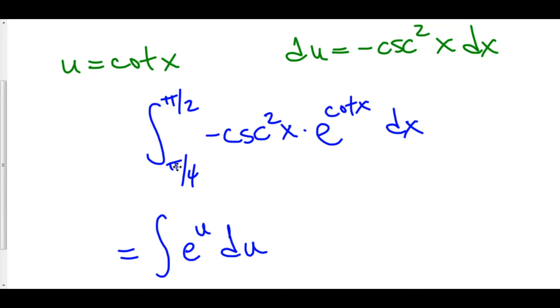So, for example, let's plug pi over 4 into cotangent. Cotangent of pi over 4, that is cosine of pi over 4 over sine of pi over 4, which is root 2 over 2 over root 2 over 2, which is just 1. And if I plug pi over 2 into cotangent of x, that's cosine of pi over 2 over sine of pi over 2, which is 0 over 1, which gives me 0.